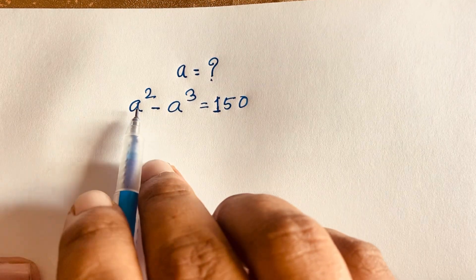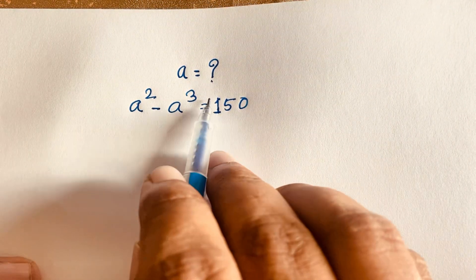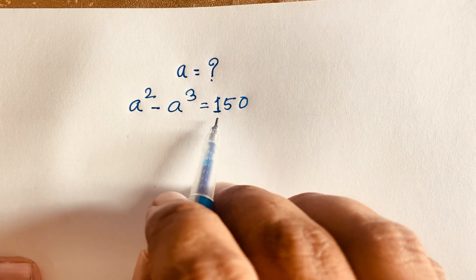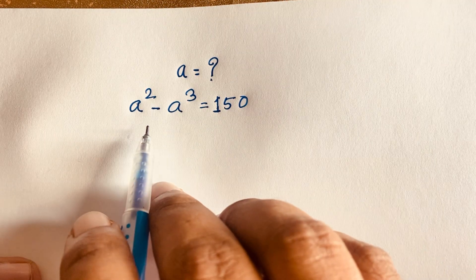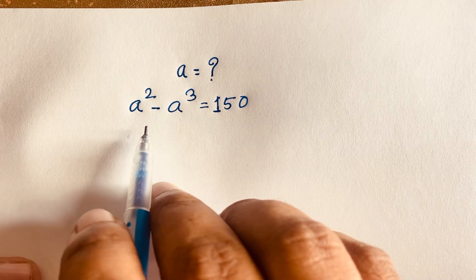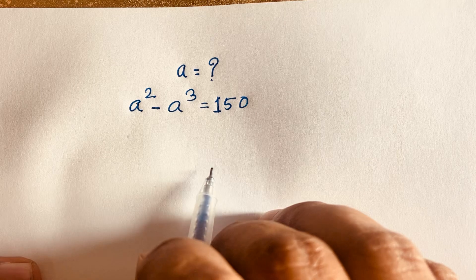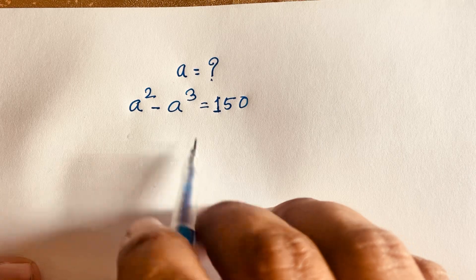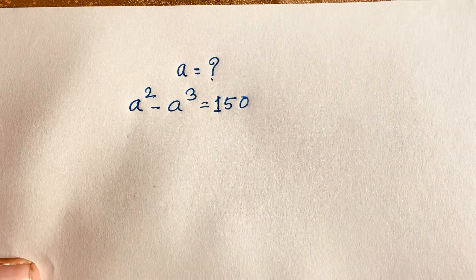If you think a is equal to 1, so 1 squared minus 1 cubed, it is not equal to 150. But if you think a is equal to minus 5, yes, this time you can see that 150 is equal to 150. So the value of a will be minus 5.